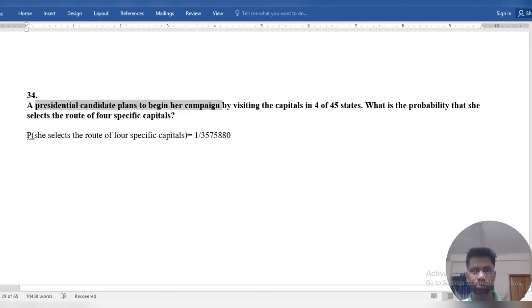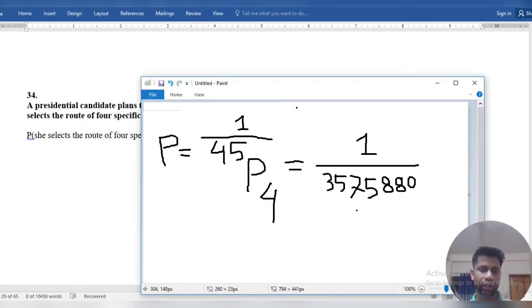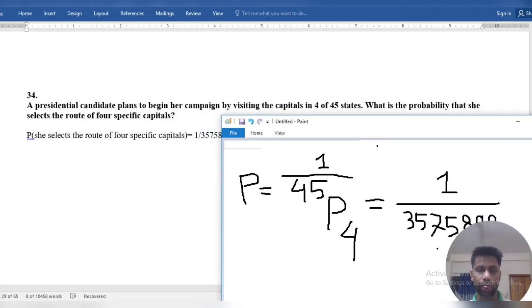Our question number is 34. A presidential candidate plans to begin her campaign by visiting the capitals of four of 45 states. What's the probability that she selects the route to four specific capitals? The probability is one over 45 permutation 4.